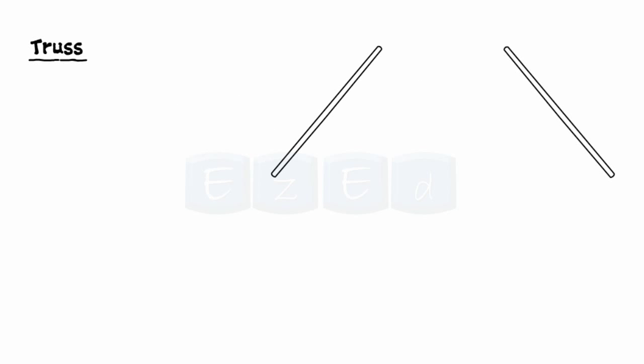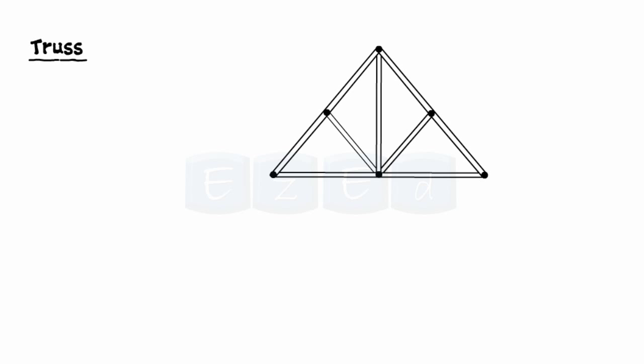A truss consists of thin slender members which are pinned connected at the ends, thus forming a joint. The loads act only on the joints and not on the members.